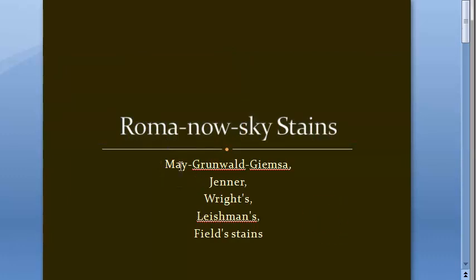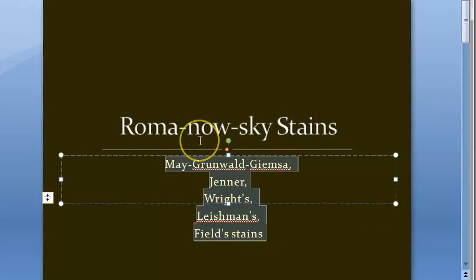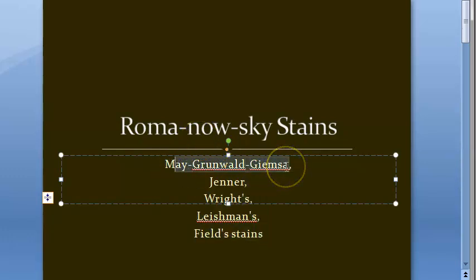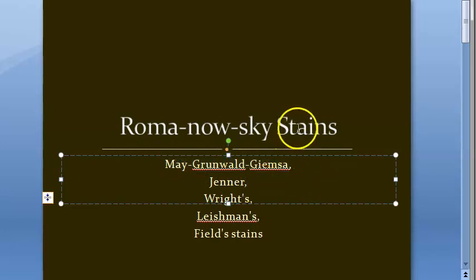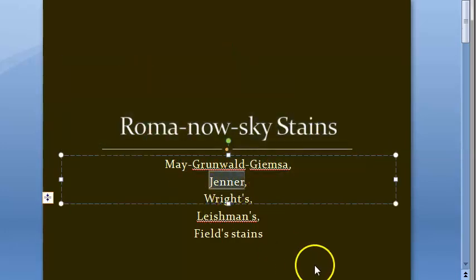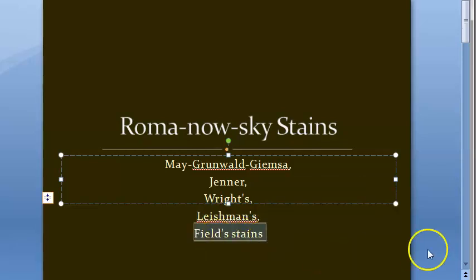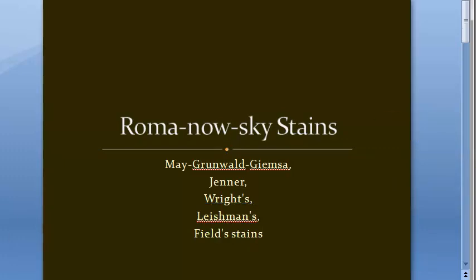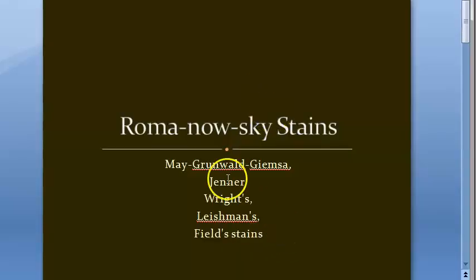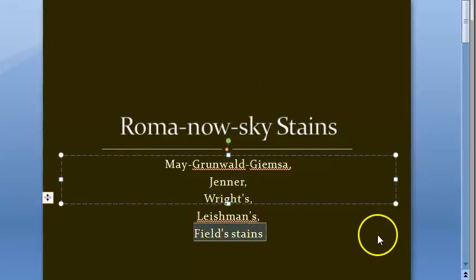Examples of Romanowski stains include all of the following: May-Grünwald Giemsa stain, Giemsa stain, Jenner stain, Wright's stain, Lishman stain, and Fields stain — all of these come under Romanowski stains.